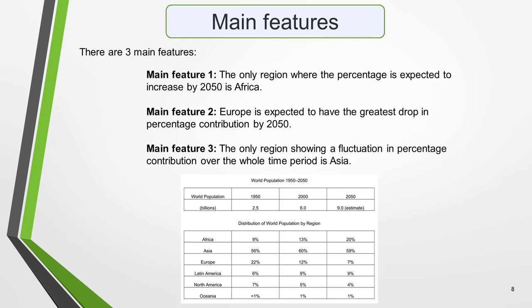Don't look at the numbers in detail at this stage. Instead, focus on general trends. What are the most notable changes in data between 1950 and projected figures for 2050? There are a number of different features we can select from this table chart. Here are the three that I've chosen. Main feature one: the only region where the percentage is expected to increase by 2050 is Africa. Main feature two: Europe is expected to have the greatest drop in percentage contribution by 2050. And main feature three: the only region showing a fluctuation in percentage contribution over the whole time period is Asia.